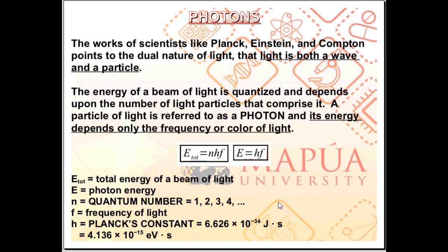Integers greater than 0, which means E total is just limited to H F, 2 H F, 3 H F, 4 H F, and so on. The energy of the beam of light is limited to certain values. The energy is quantized.